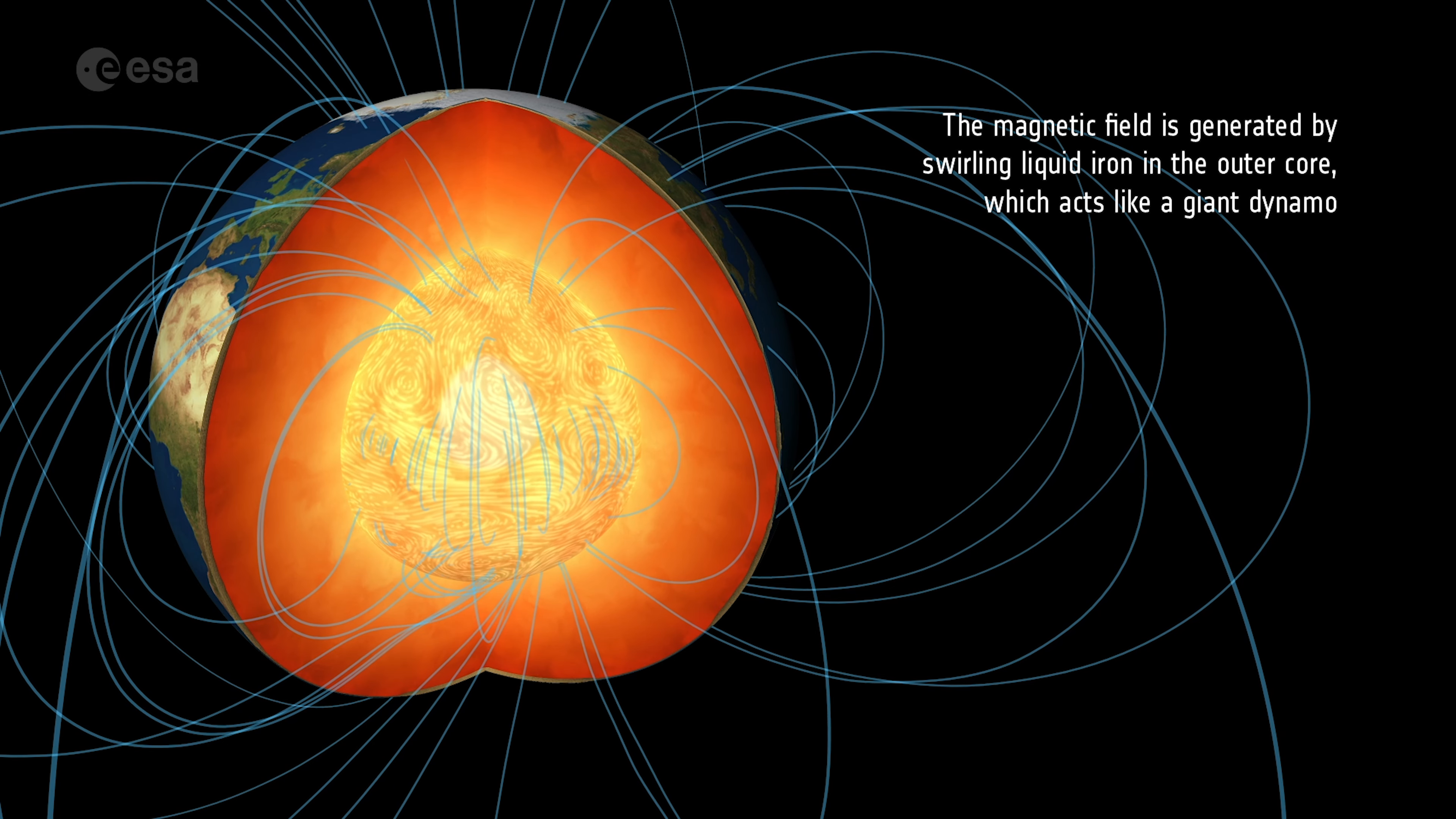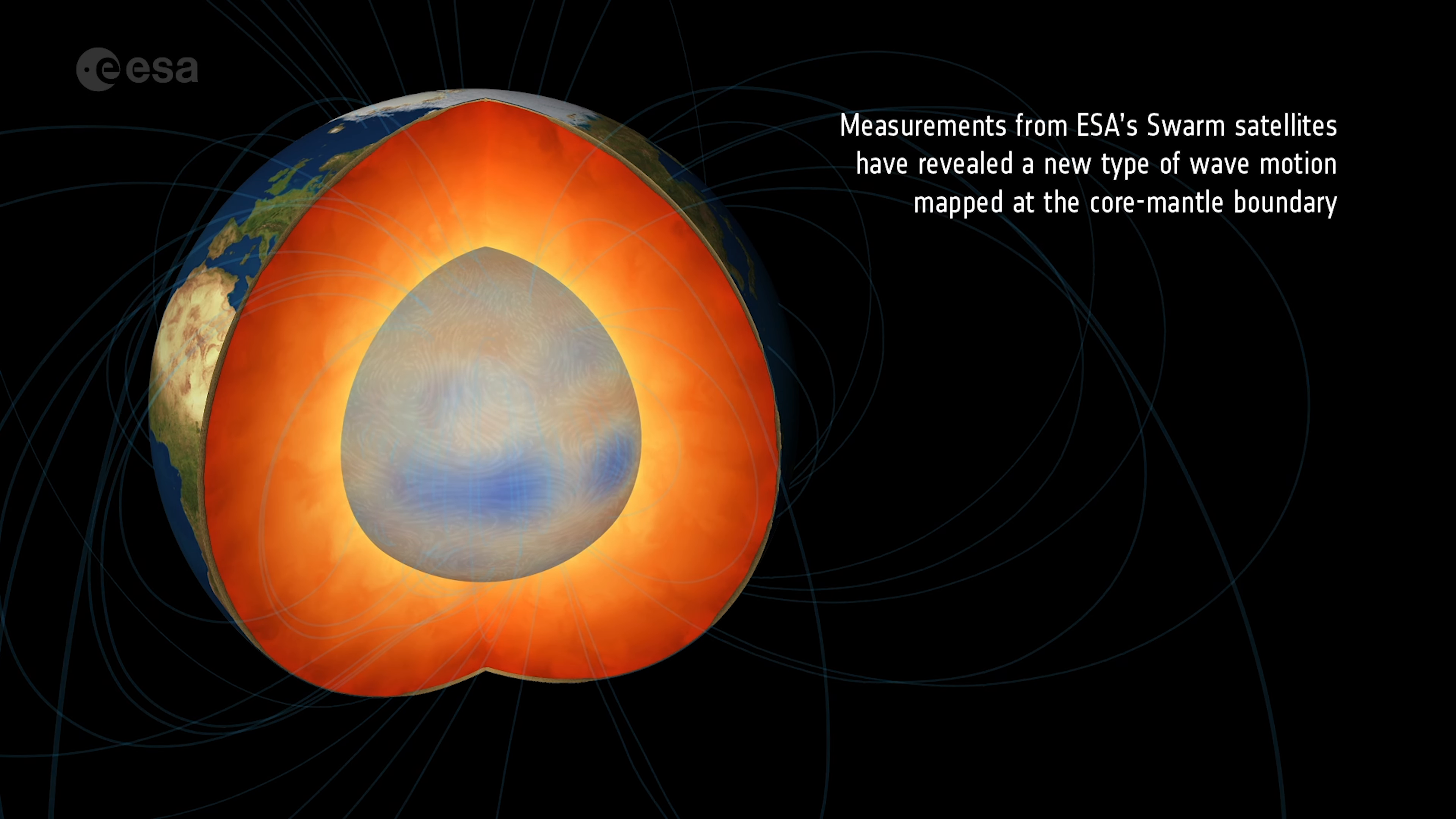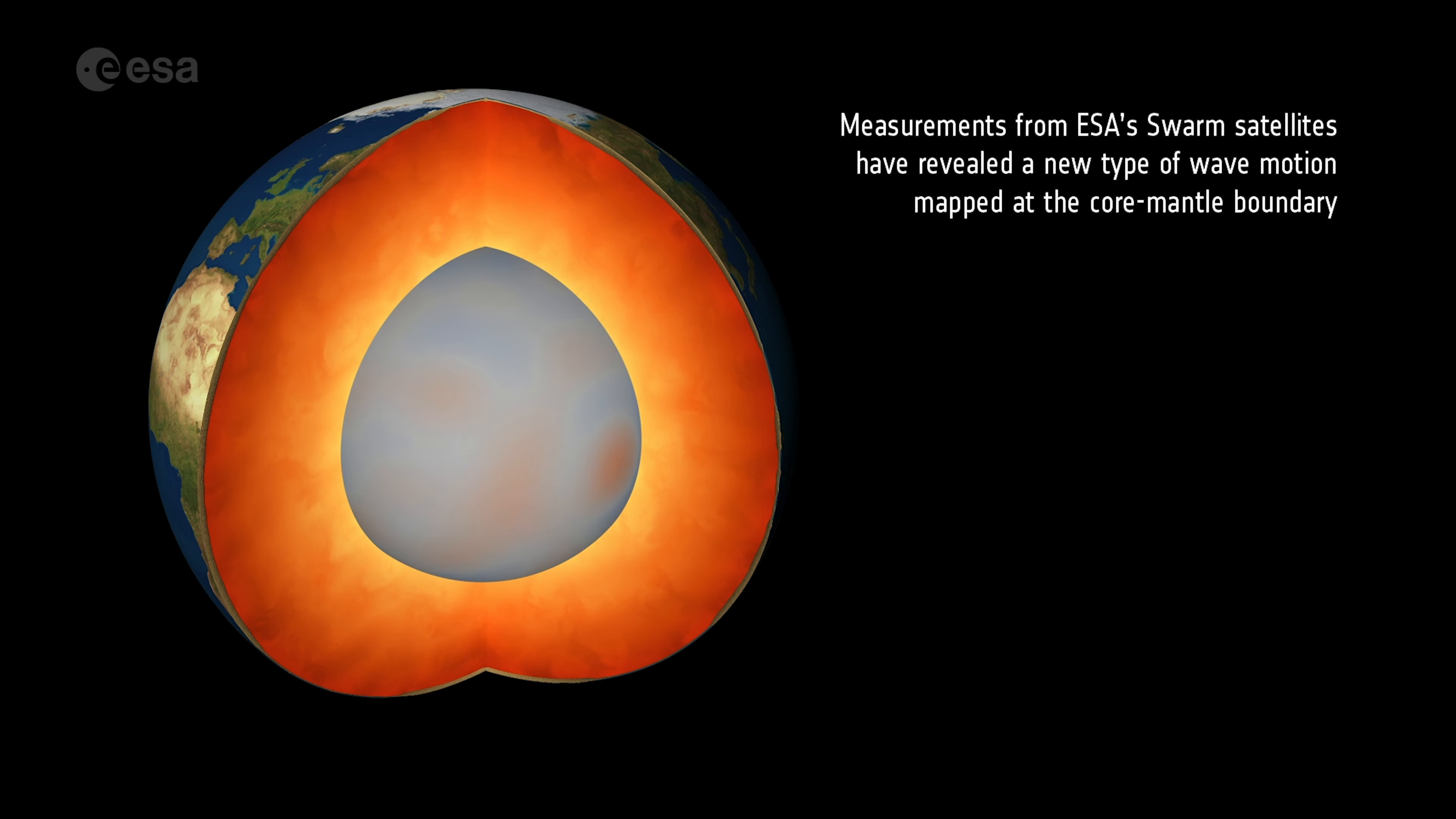Earth's magnetic field protects us from harmful particles in the solar wind. It extends deep into space, but is generated deep within our planet.